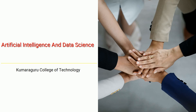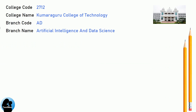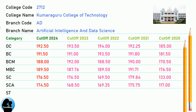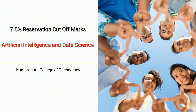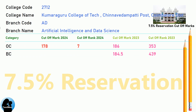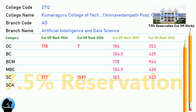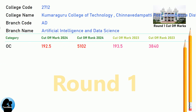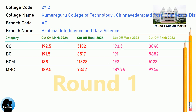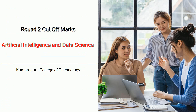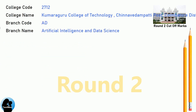DNA cutoff for Kumaraguru College of Technology in Artificial Intelligence and Data Science. DNA 7.5 Reservation cutoff for Kumaraguru College of Technology in Artificial Intelligence and Data Science. DNA Round 1 cutoff and DNA Round 2 cutoff for Kumaraguru College of Technology in Artificial Intelligence and Data Science.